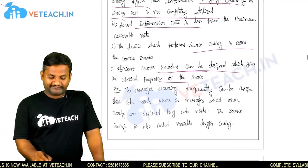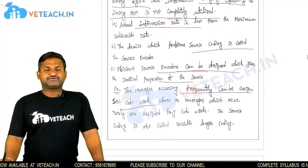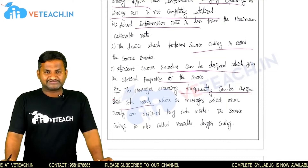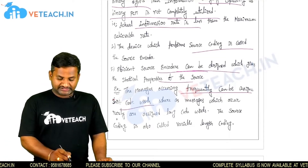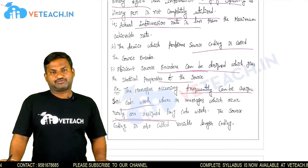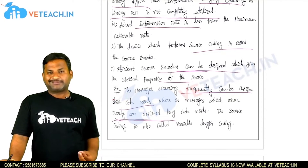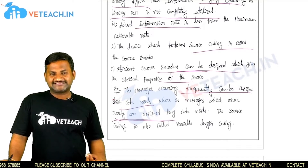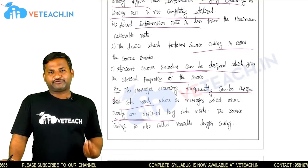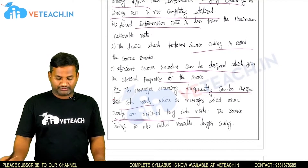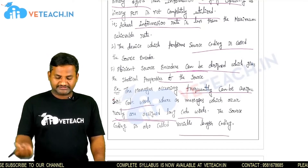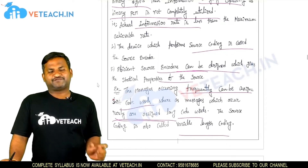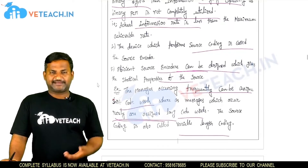Messages occurring frequently can be assigned short codes. If the same message is repeated a number of times, it can be assigned a simple short code, which is why the information rate is very high. Messages which occur rarely are assigned long codes. So frequently repeated messages get short code words, while infrequent messages get large code words. This is also called variable length coding — it depends upon the number of bits: four bits, five bits, six bits, and so on.